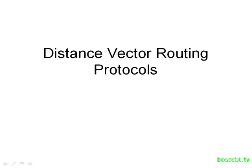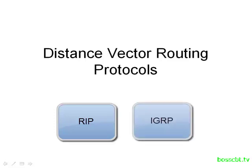Hello, and welcome to this tutorial. We're going to talk about distance vector routing protocols. You might remember RIP from ICND1. RIP is a distance vector routing protocol, and we covered some of the concepts on how RIP works and how to configure it. You may have also come across IGRP, which is another distance vector routing protocol.